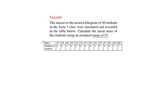Let us look at this example. The masses to the nearest kilogram of 40 students in the Form 3 class were measured and recorded in the table below. Calculate the mean mass of the students using an assumed mean of 53. This is how we proceed.